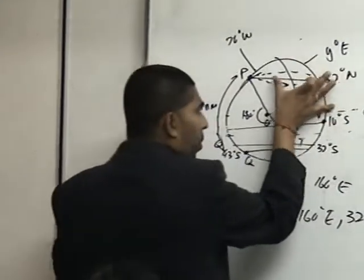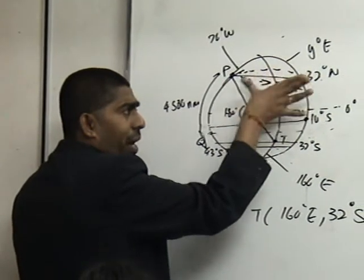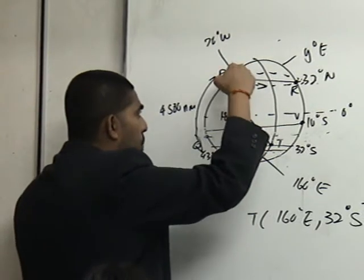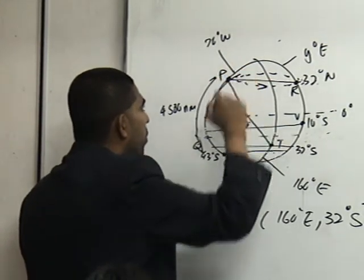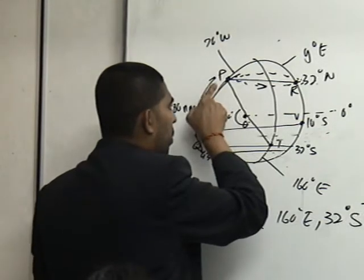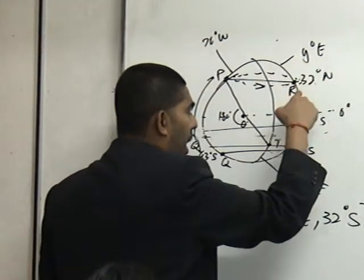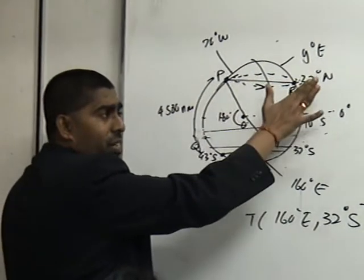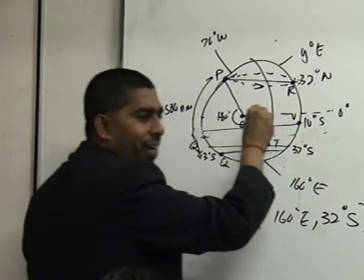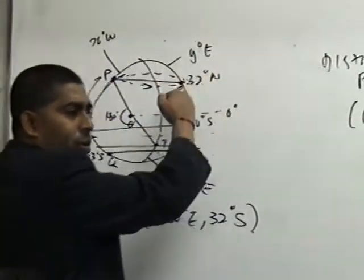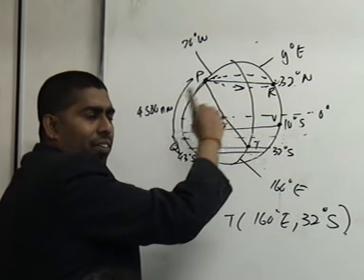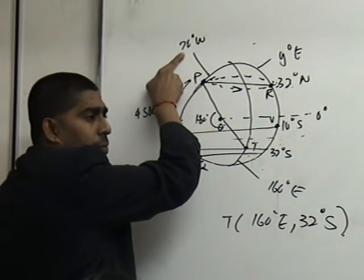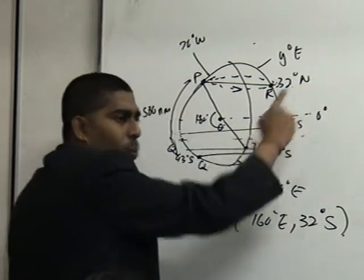This theta now is the difference angle between the what? Both longitude. What is the longitude of P? What is the longitude of P students? 20 degrees west. And what is the longitude of R? Y degrees east. If 1 is west, 1 is east, what will you do? Add. Are you clear now? Say, north and south, you add. West and east, you add. So, 20 degrees plus with Y. Wonderful.